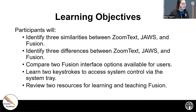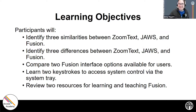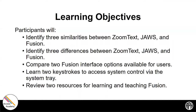We want to help you understand the difference between the ZoomText magnifier and reader versus the JAWS screen reader. Our learning objectives: we're going to identify three similarities between ZoomText, JAWS, and Fusion, and three differences between those products. We'll compare two Fusion interface options, learn keystrokes that access system control via the system tray, and review two resources for learning and teaching Fusion.